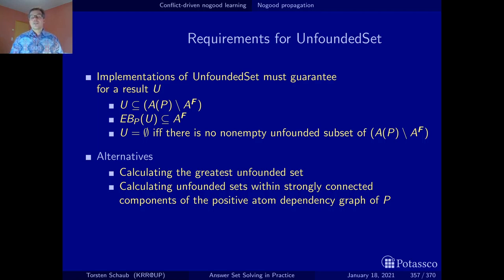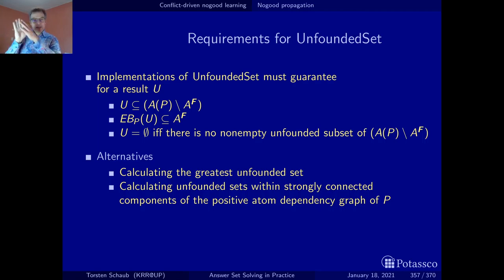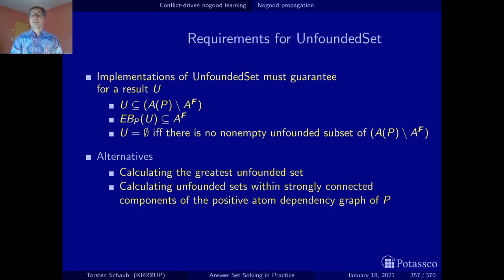We are not looking for arbitrary unfounded sets — during parsing we analyze the positive atom dependency graph, detect strongly connected components, and keep the atoms making up the strongly connected subgraphs, since these are the only sources of unfounded sets. This is also what happens in the algorithm even though we haven't detailed it so far.